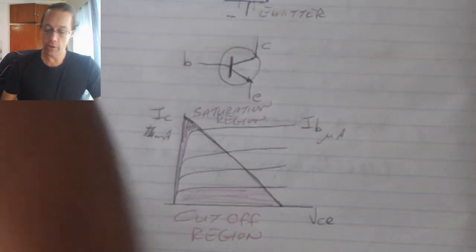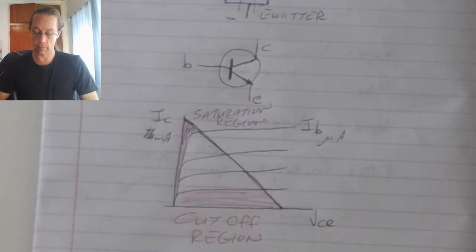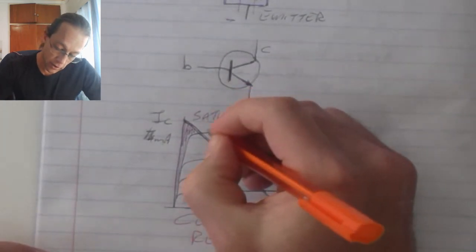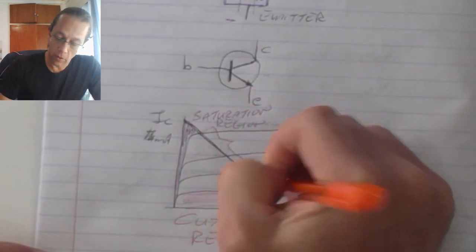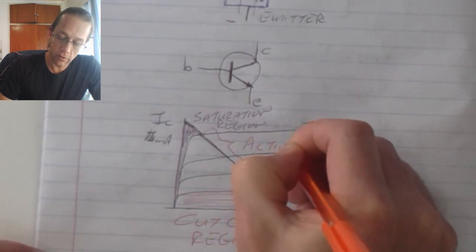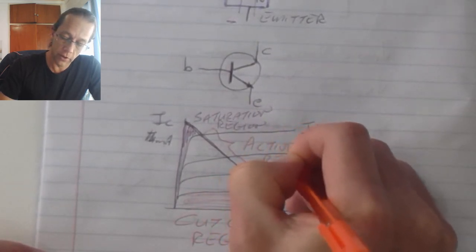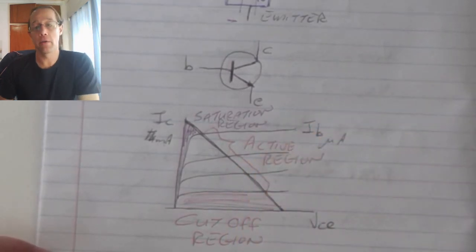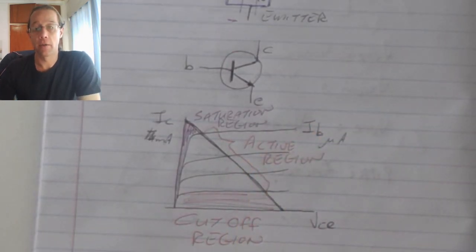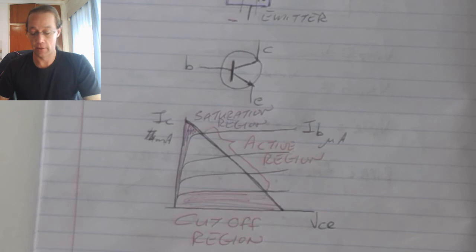The third and final area of operation is this section in the middle. We call this the active region, and that is where the transistor actually operates as an amplifier.